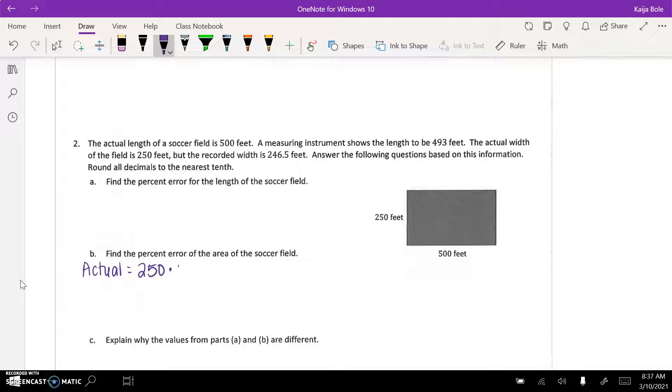So 250 times 500, which would get to 125,000. And then the approximate, you would also have to do which according to the sentence at the top, it says the measuring instrument shows the length to be 493 feet.